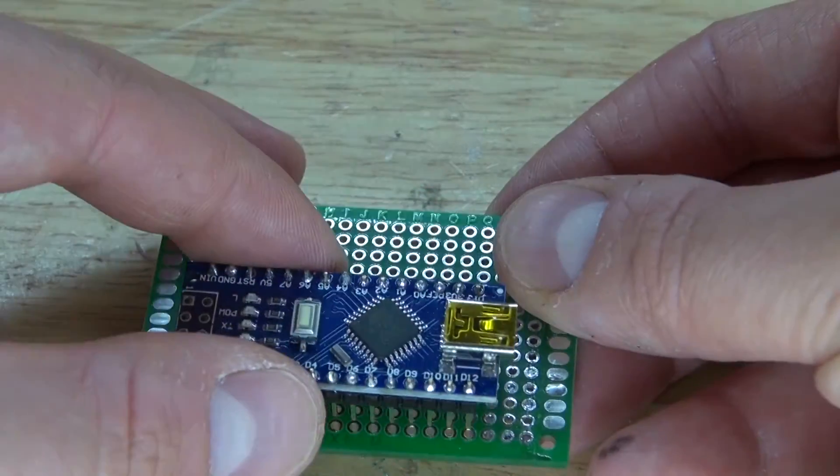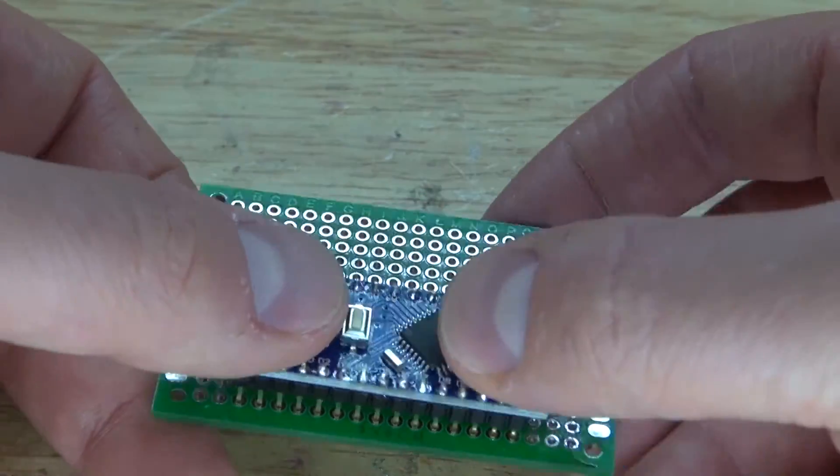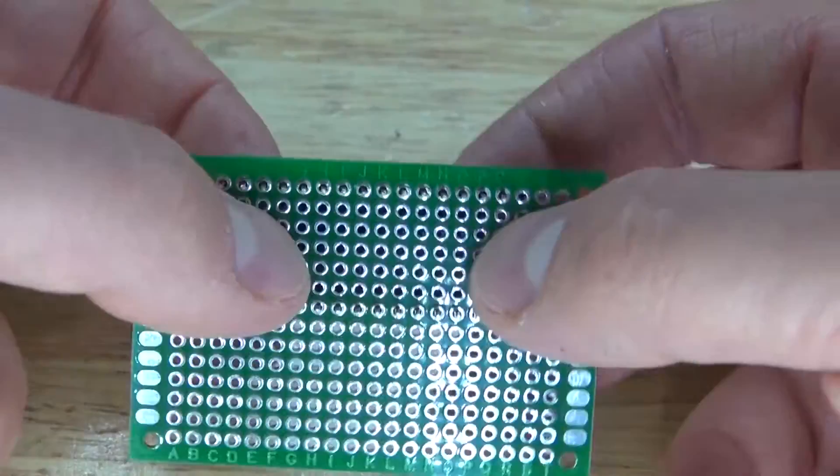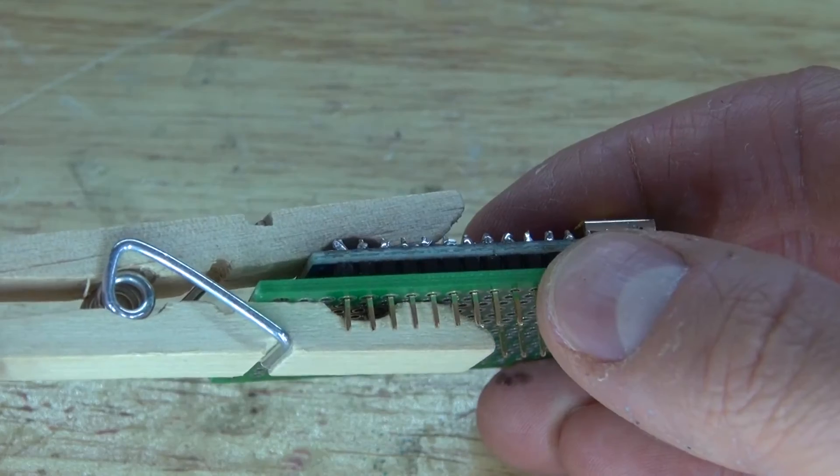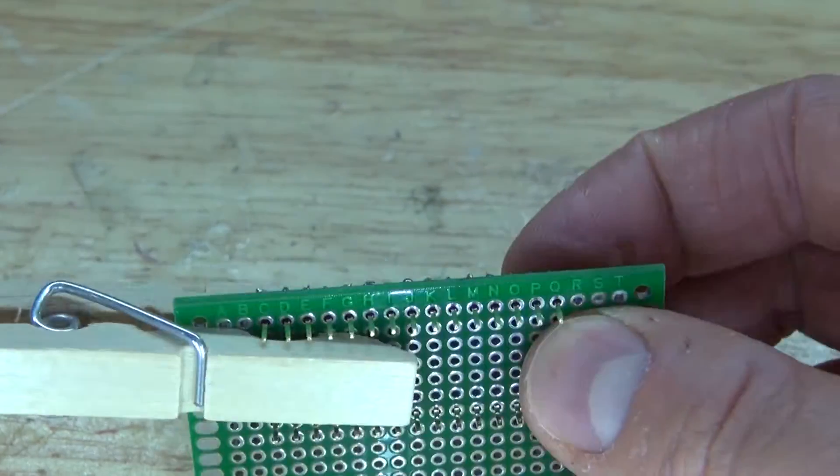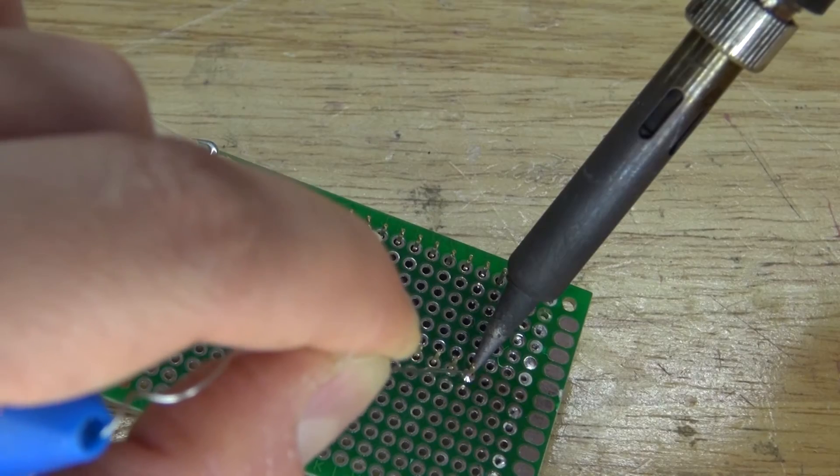Next, I'm going to take the perfboard and the Arduino Nano and place it into the perfboard, push it in all the way, clamp it down, and now solder it into place.